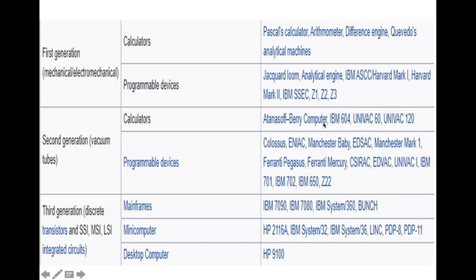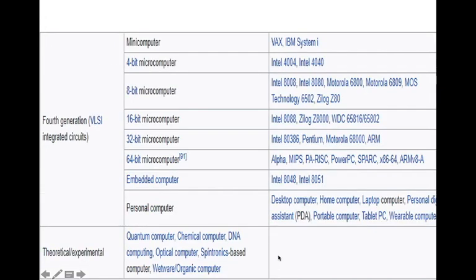Second generation had calculators and programmable devices like Colossus, ENIAC, and Manchester Baby. Third generation used transistors and SSI, MSI, LSI — we had IBM mainframes, minicomputers, and desktop computers. Fourth generation used VLSI — 4-bit, 8-bit, 16-bit, 32-bit, 64-bit computers — along with embedded systems and personal computers. Now in the theoretical or experimental stage we have quantum computing, chemical computing, DNA computing, and optical computing — different technologies we are trying to use to make computers.